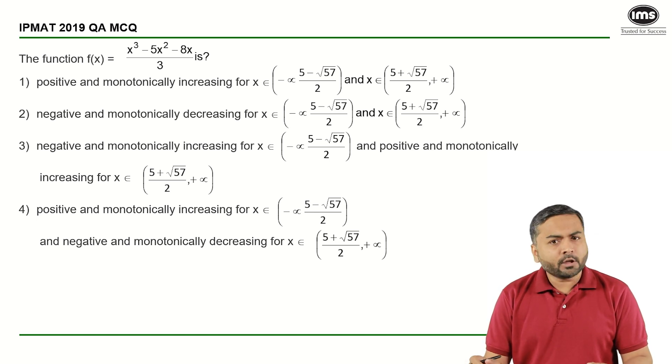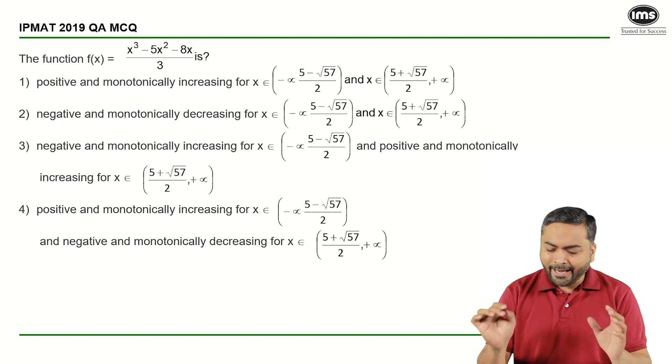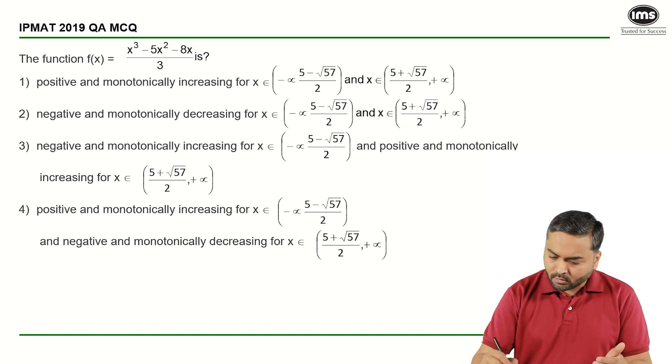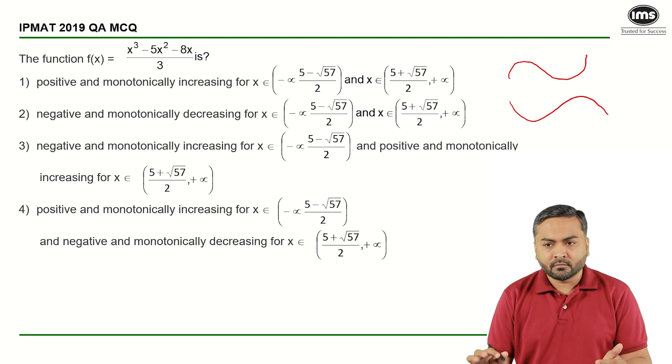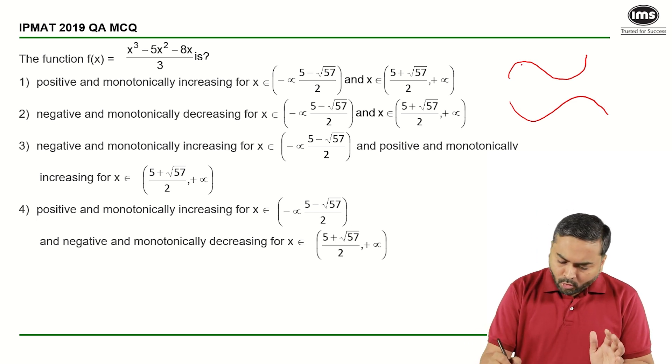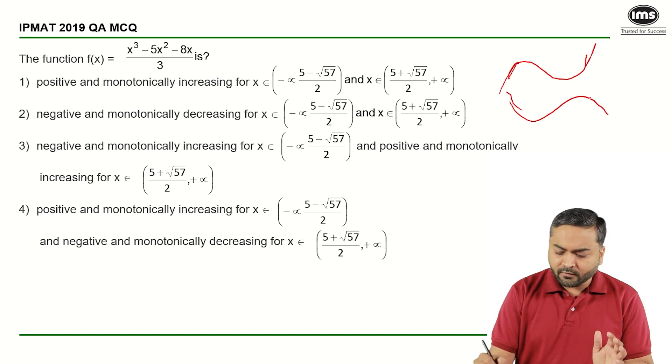So if I look at the function, it's a cubic equation, and we know that the cubic equation would either be like this or it would be like this. Either it will tend to negative infinity here or it will go to positive infinity here. Here it will go to positive infinity, here it will go to negative infinity. Correct?